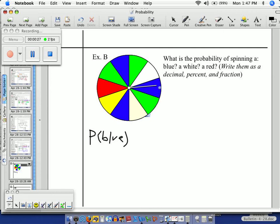How many blues are there? Three. That's our desired outcome, that shall be on top. How many total outcomes are there? Ten. Ten possible places for this spinner to land on.